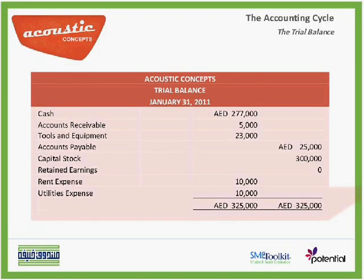Since equal amounts of debits and credits are entered in the account for every transaction recorded on a double-entry basis, the sum of all the debits in the ledger account must equal the sum of all the credits. So the computation of the account balances has been accurate, and it follows that the total of the amounts with debit balances must equal the total of the accounts with credit balances.